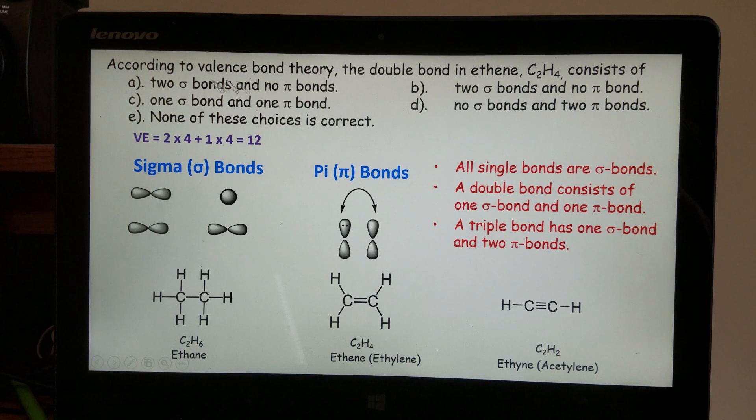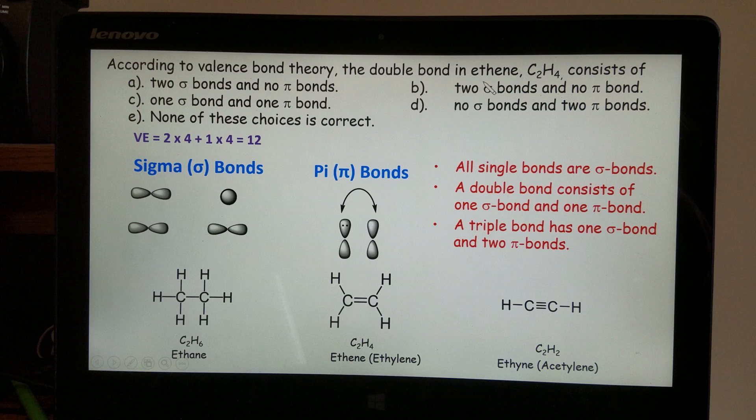Let's go back to this question. According to valence bond theory, the double bond in ethylene, also called ethylene, the common name, so C2H4, the double bond consists of, that means it just asks how many sigma bonds, how many pi bonds in that double bond.